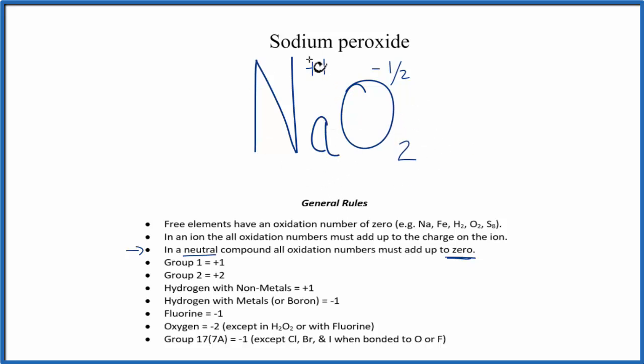So to recap, we found the one that we knew, the sodium, which is always +1 because it's in group 1 right here. And then we used this rule that in a neutral compound they'll all add up to 0 to figure out the oxidation number on each oxygen here. Each oxygen is -1/2. This is Dr. B, and thanks for watching.